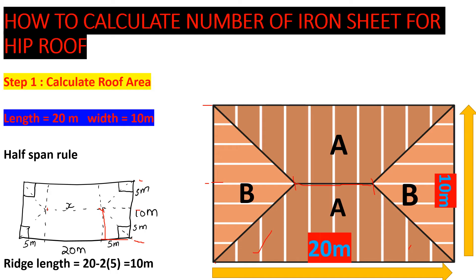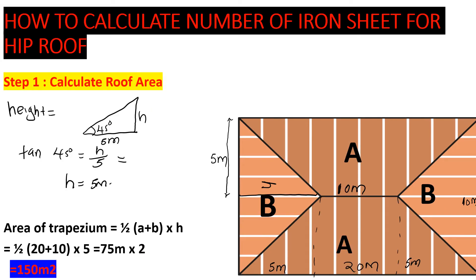Now we need to find the height (h) of the roof in the plan. We have a right-angled triangle with a 90-degree angle and a 45-degree pitch angle, with the horizontal run being 5 meters. Using SOHCAHTOA: tan(45°) = h / 5. Since tan(45°) = 1, our height h = 5 meters.